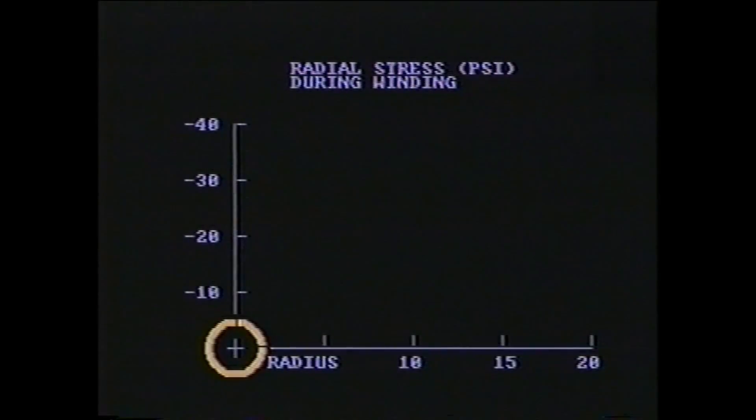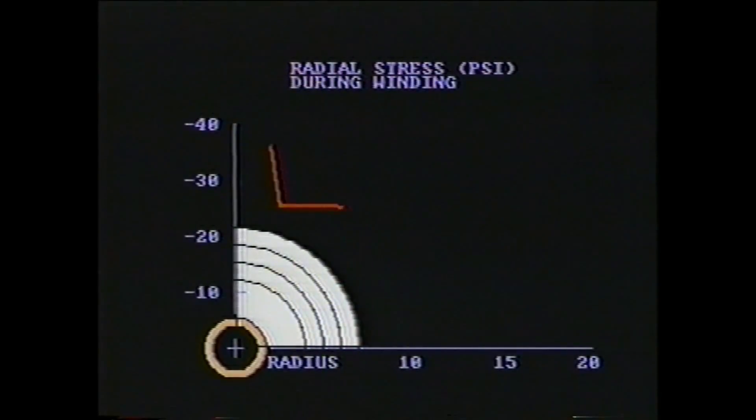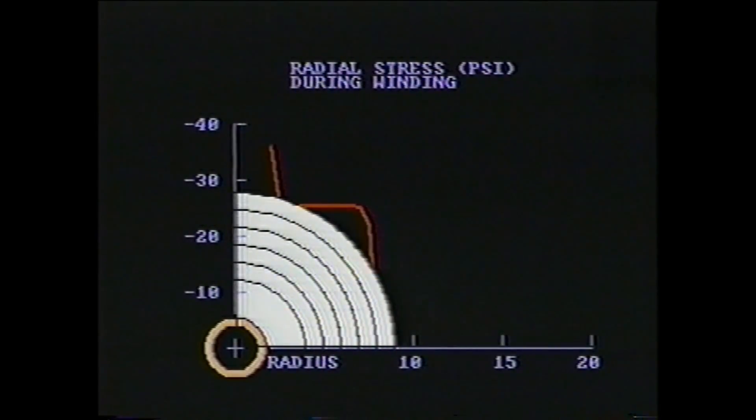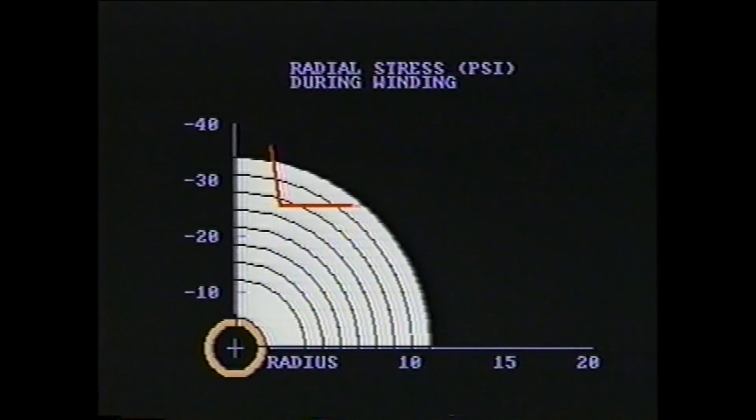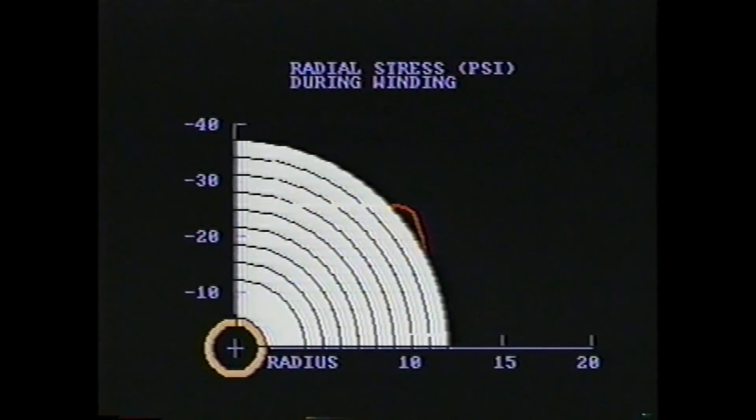As the paper is wound into a roll, it sees a new set of stresses which define its roll structure. The first of which are the radial stresses which act in the z direction of the paper. The radial stresses represent the pressure between adjacent layers in the roll.